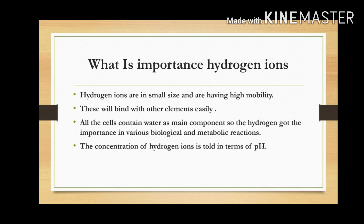What is the importance of hydrogen ions? You all know that a hydrogen ion is formed when a hydrogen atom loses its electron — it becomes the hydrogen ion. Because of its small size and high mobility, these are very important in biological systems. They can bind with other elements easily.